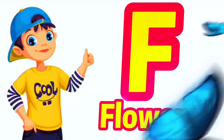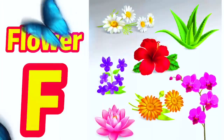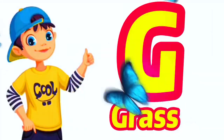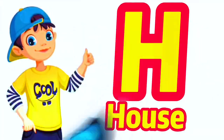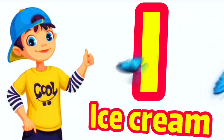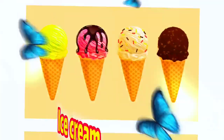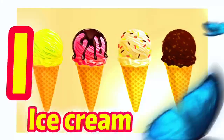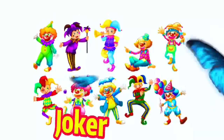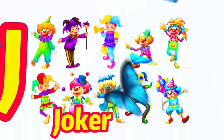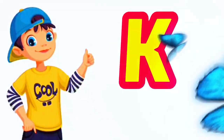A for flowway, G for grass, H for house, I for ice cream, J for joker, K for kite.